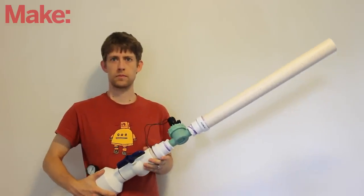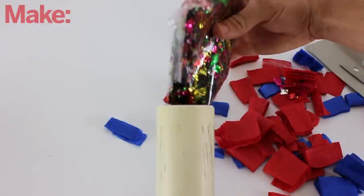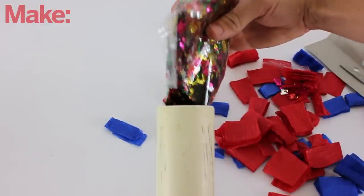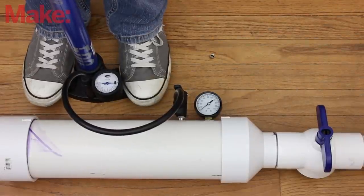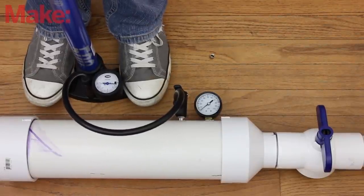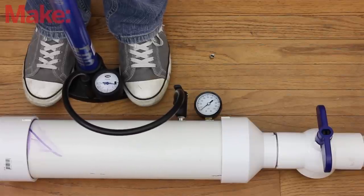Now your remote controlled confetti cannon is complete. It's time to try it out. Start by putting some confetti in the barrel. Then connect your pump to the air valve and pressurize the air chamber. Increase the pressure slowly, checking for leaks as you go. I recommend staying below 40 psi.